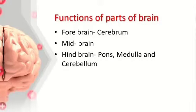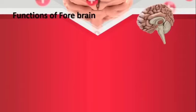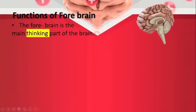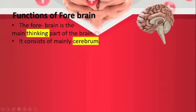Let us quickly understand the functions of the forebrain, midbrain, and hindbrain. Firstly, let us see the functions of the forebrain. The forebrain is one of the thinking parts of the brain. Your thinking process, thought process, and memory — everything is done by the forebrain, which contains the cerebrum.